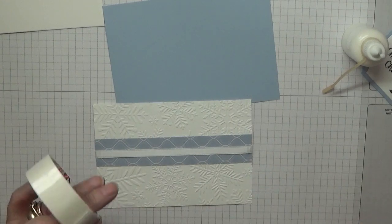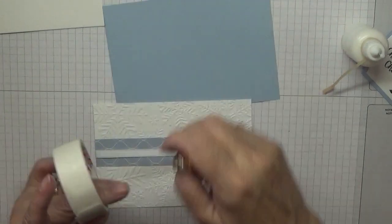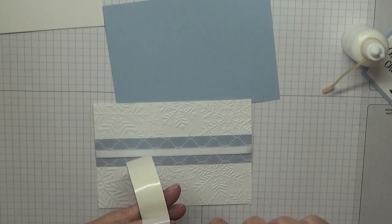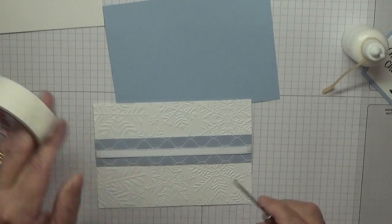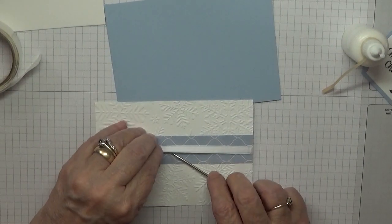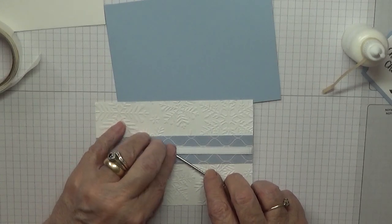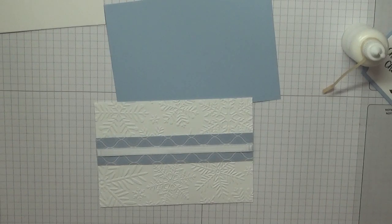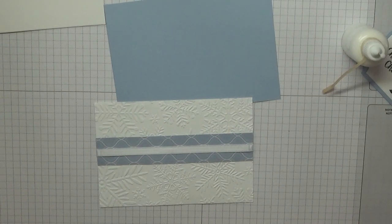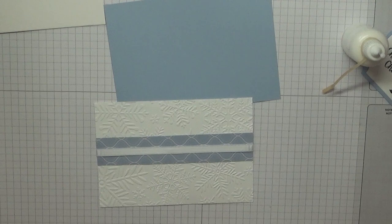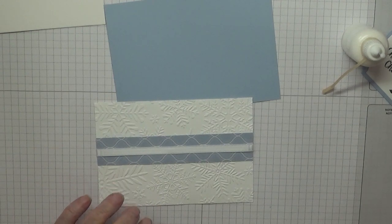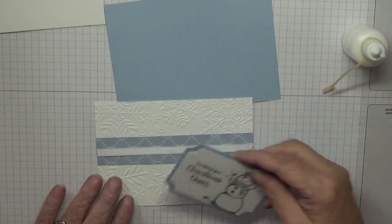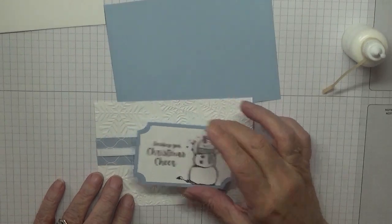Now what I am going to do is find my glue dots and just pop one under the ribbon in the middle, just to stop it moving about.